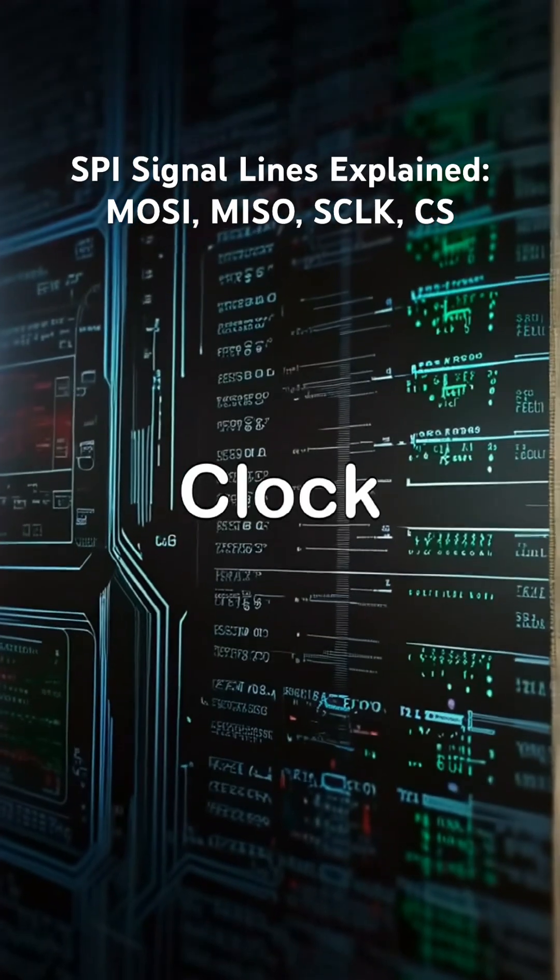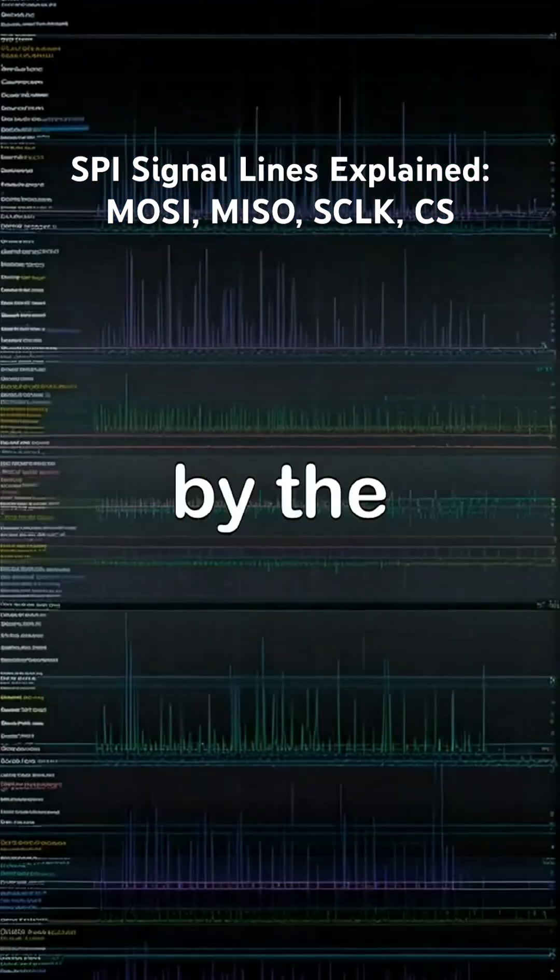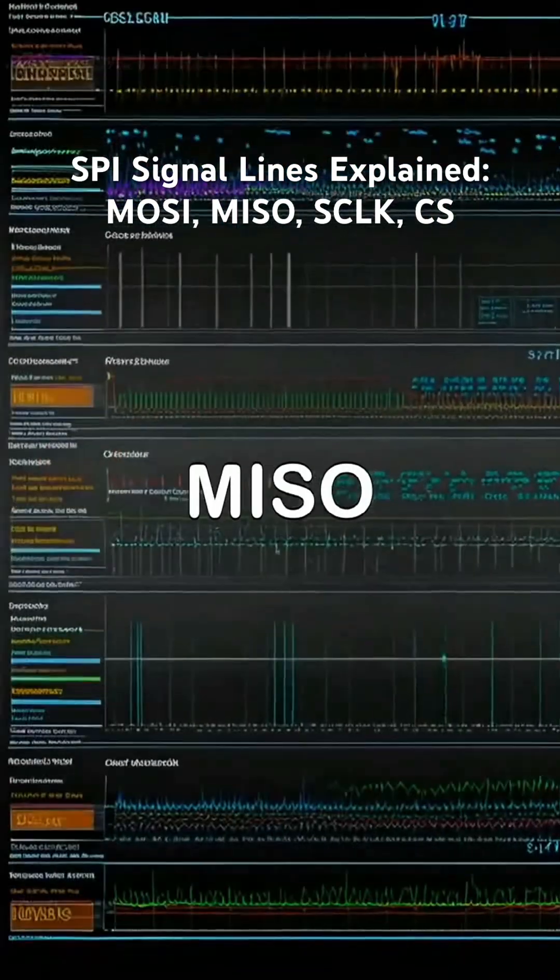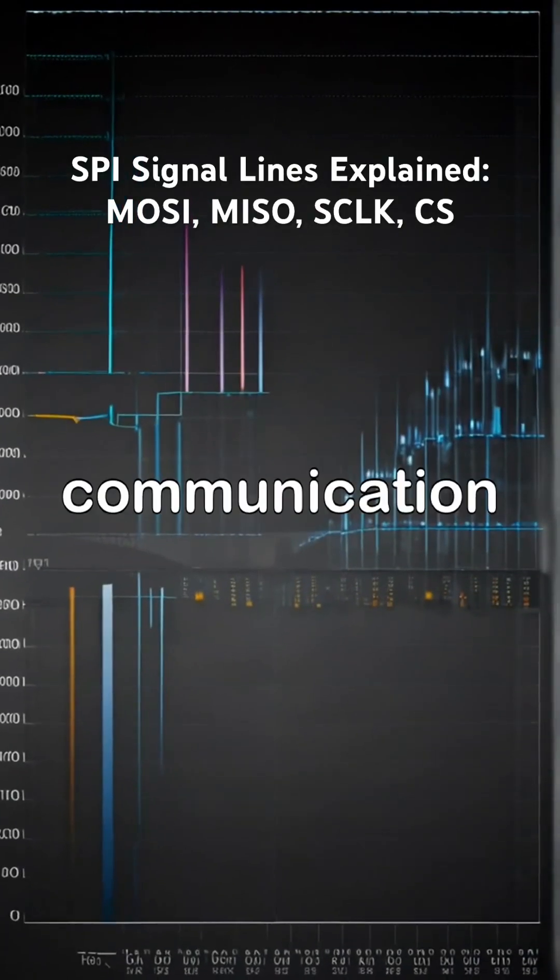SCLK, Serial Clock. The clock is always generated by the master. Every clock pulse synchronizes data shifting and sampling on MOSI and MISO. Without SCLK, no SPI communication happens.